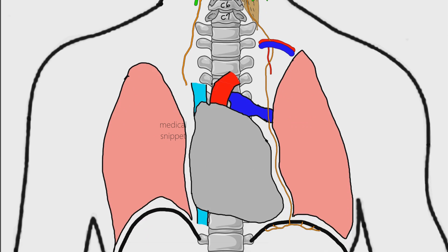In the thorax, the right phrenic nerve passes downward along the right side of superior vena cava, right atrium, and terminal part of inferior vena cava. The left phrenic nerve in thorax lies lateral to arch of aorta, left ventricle. The phrenic nerve is separated from the above structures by the fibrous pericardium.